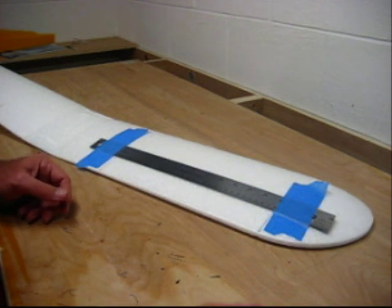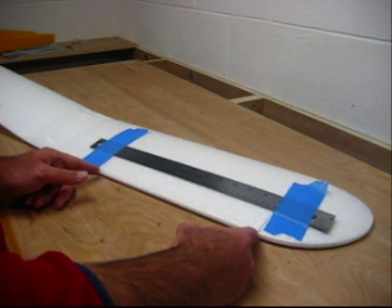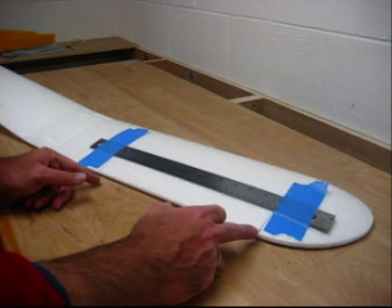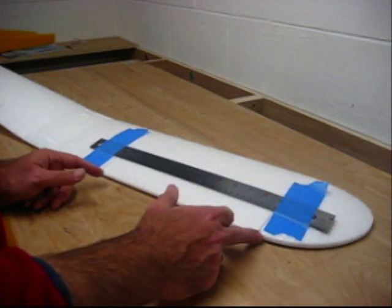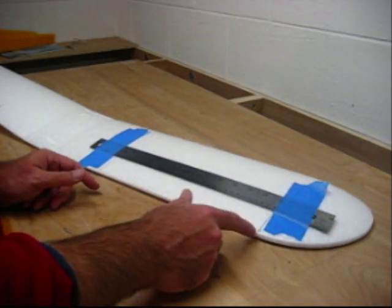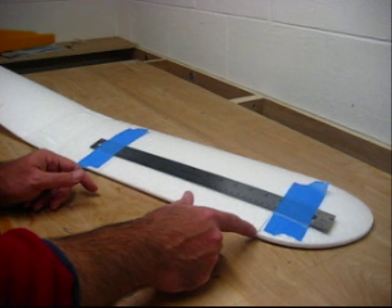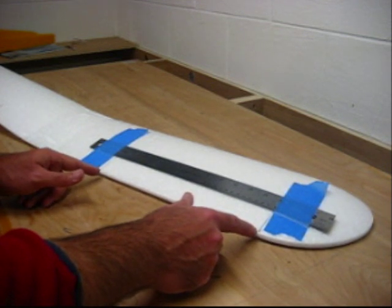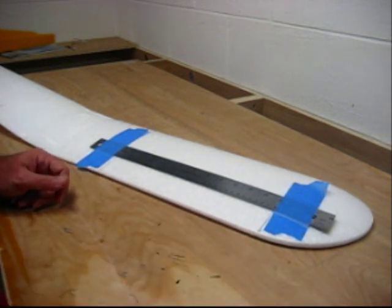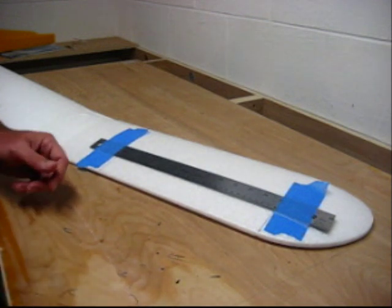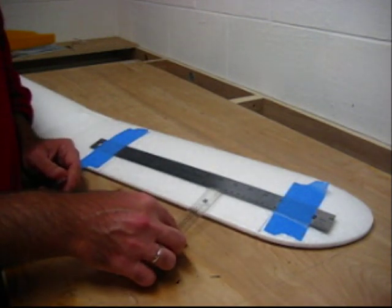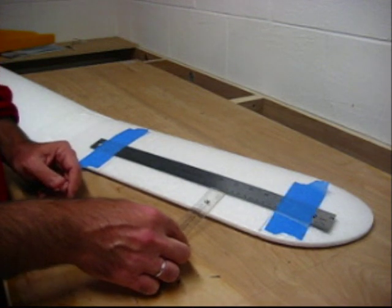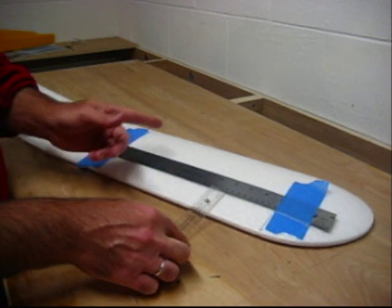I make my ailerons 12 inches long. I don't go into where the wing tip curves. I start the aileron right where it flattens out and measure out 12 inches. I make my ailerons 1.75 inches wide, or deep.